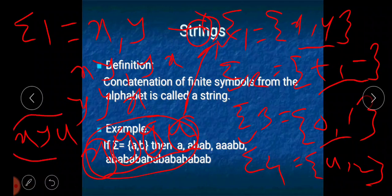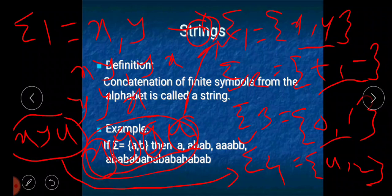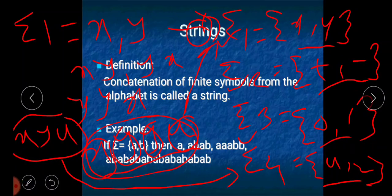Now if I take the string xyu — is this a valid string defined on alphabet1? No, because although x and y are members of alphabet1, u is not. So xyu cannot be treated as a valid string on alphabet1. Similarly, xyu is not a valid string on alphabet4 either, because in alphabet4 only u and z are present, while x and y are not members of alphabet4.